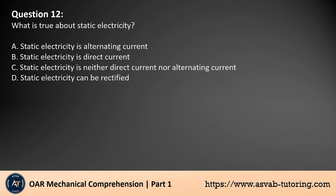Question 12. What is true about static electricity? A. Static electricity is alternating current. B. Static electricity is direct current. C. Static electricity is neither direct current nor alternating current. D. Static electricity can be rectified.